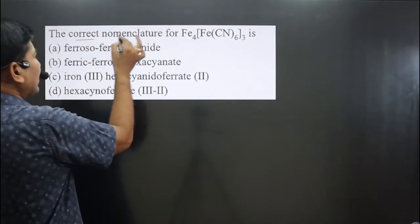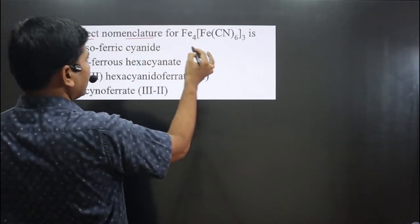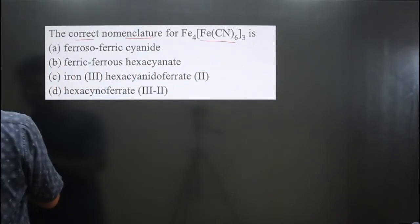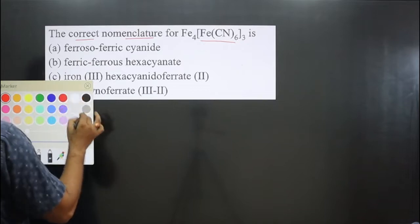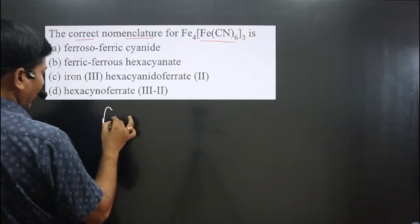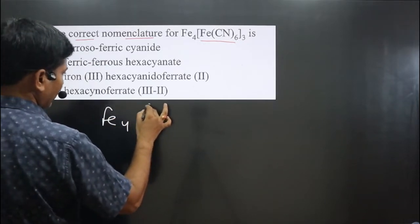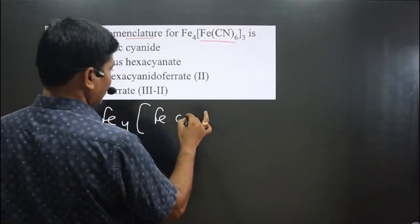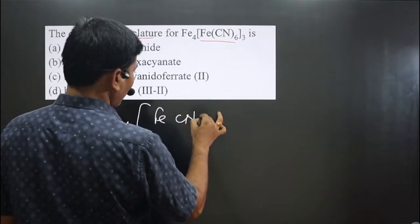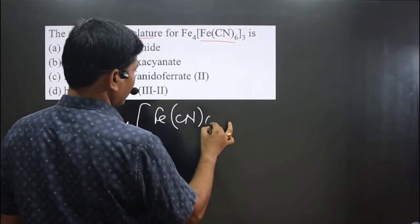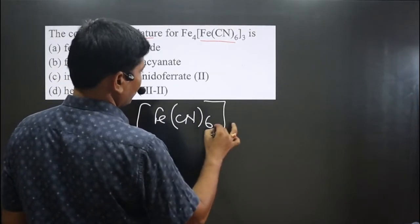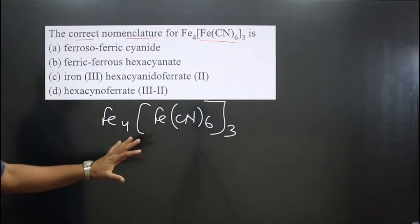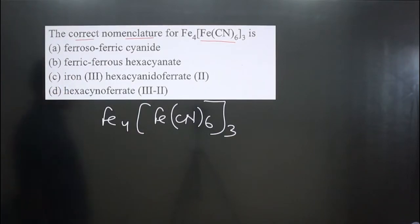The question asks for the correct nomenclature for the complex. Let me write this complex. We have Fe4 and then we have Fe[Cn]6 whole thrice. This is the complex given here.